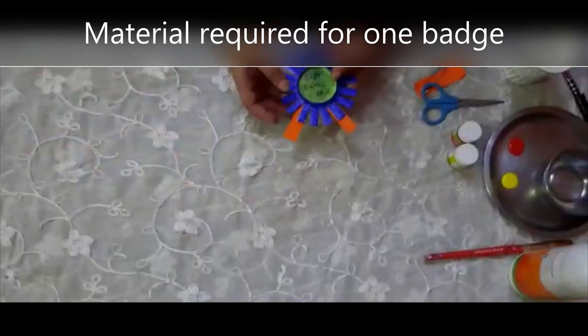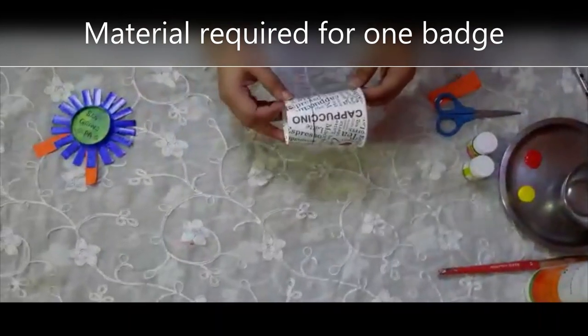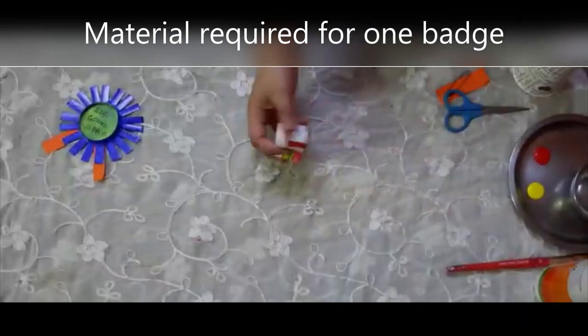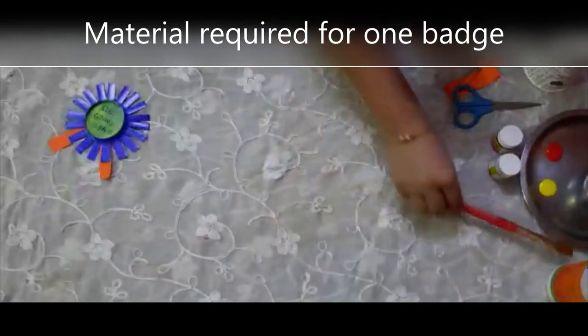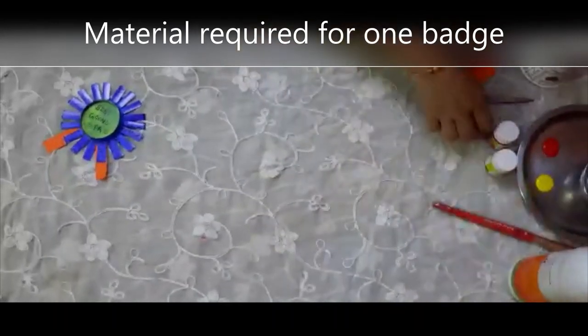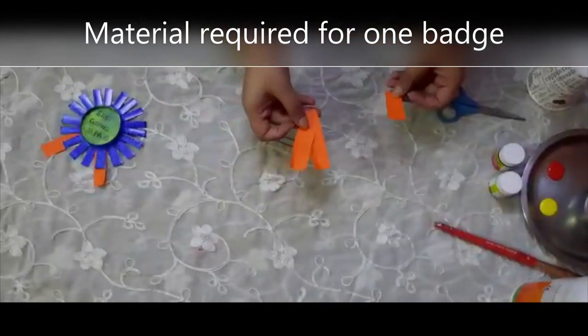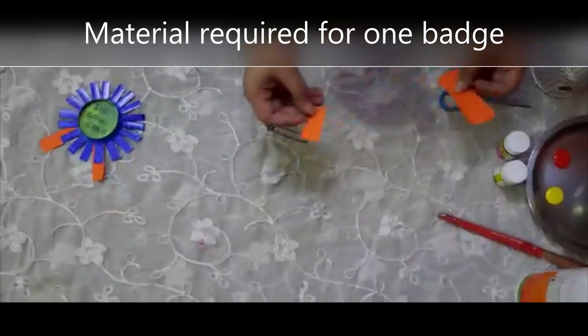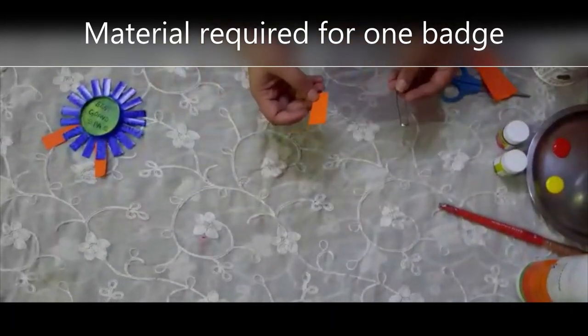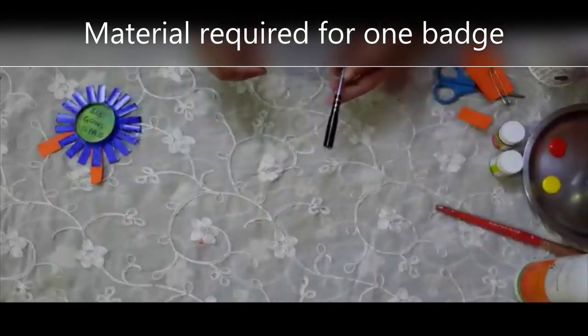Okay students, so today we will make a badge for our grandparents day. For this we will be needing a paper disposable cup and some watercolors of your choice, paintbrush, fabric glue, scissor, and a safety pin, and two small rectangles and one rectangle for securing the safety pin. Then we will need a pen to write on it. So let's start.